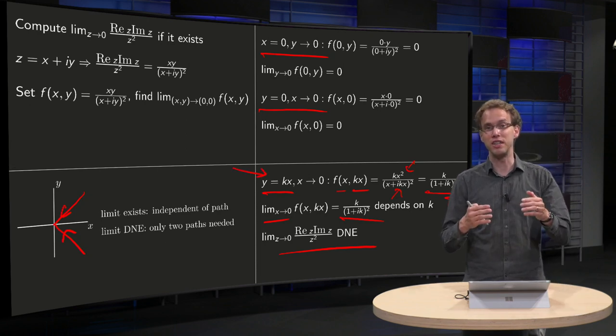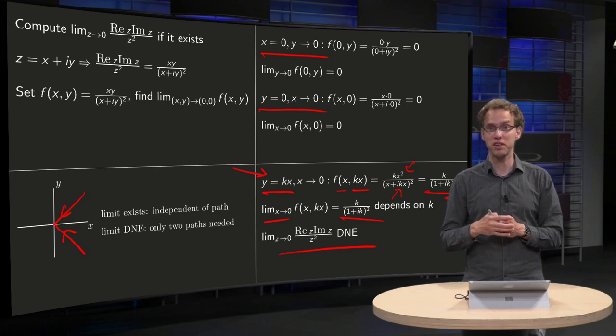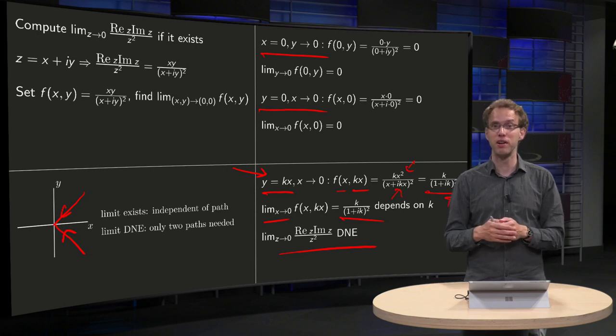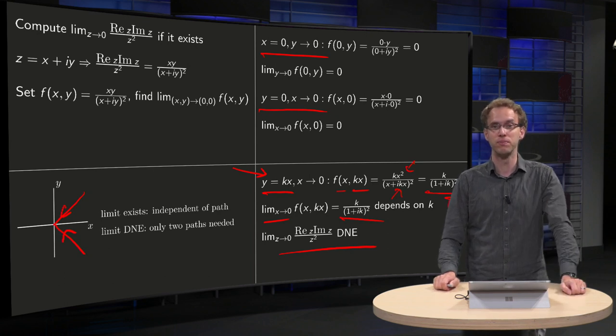Try for example this one, the y equals kx. If you see that the limits are not the same, then you can conclude that the limit does not exist. If the limits also after this one are the same, then you have a problem which we will solve in the next video. See you in the next video.